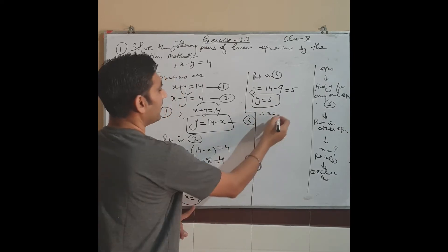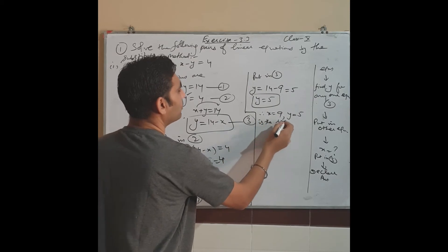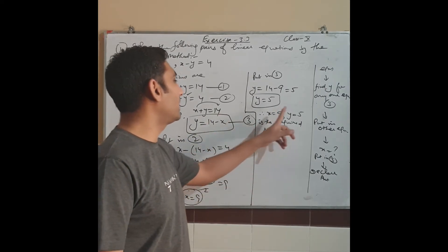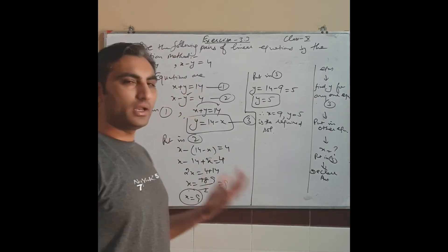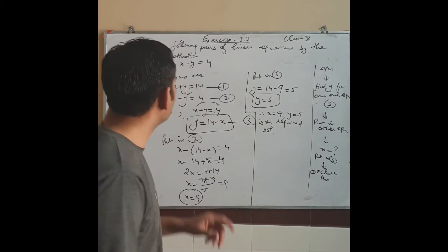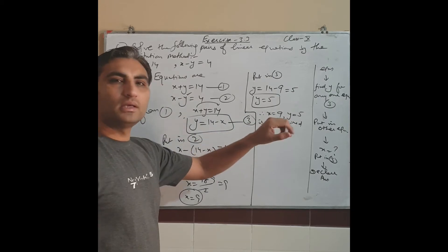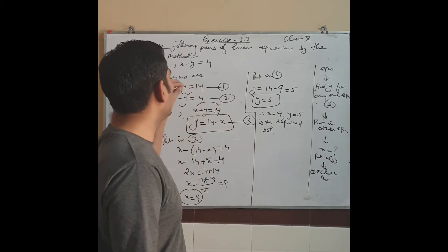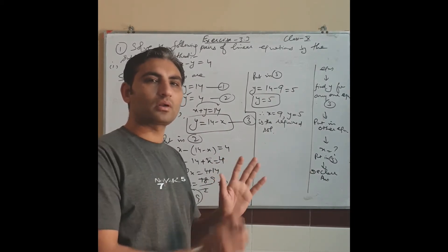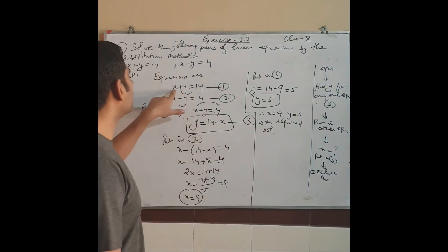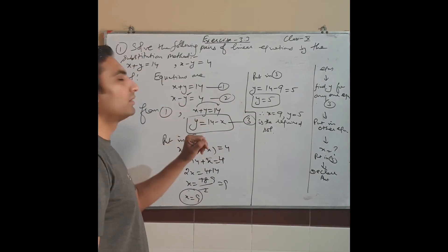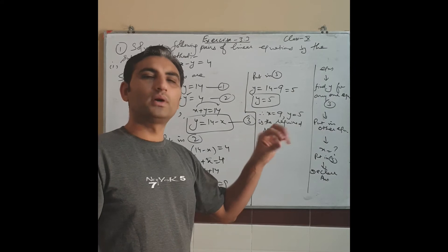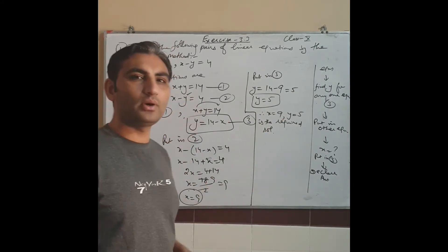Therefore x = 9, y = 5 is the required solution. After writing x and y, write the answer in a proper way: 'x = 9, y = 5 is the required solution.' If you want, you can verify in examination — put x and y values into either equation and check both sides are equal. For example, 9 + 5 = 14, and the right side is also 14, so it is correct.